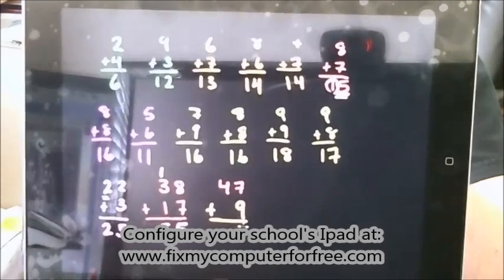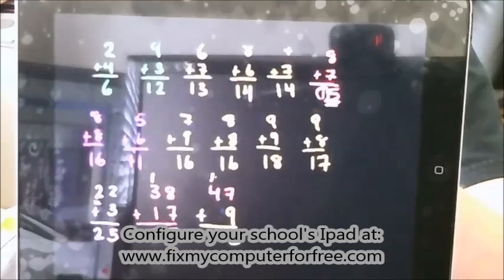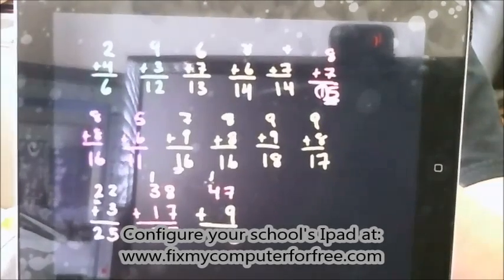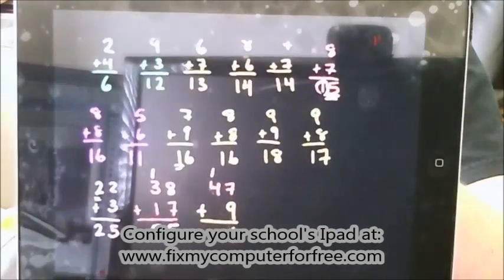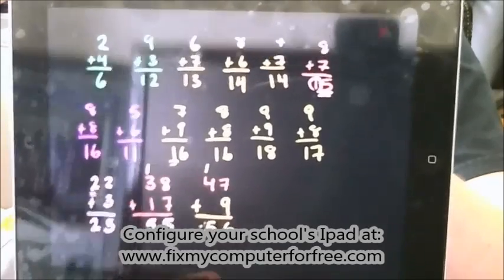So you write the 6 in the ones place and carry the 1. And now it's in the tens place, right, because this is 1 ten right there. So 1 dime plus 4 dimes is 5 dimes. So it's 5 dimes and 6 pennies, it's 56.